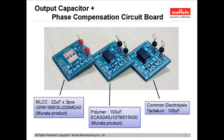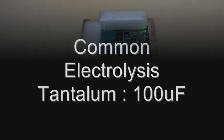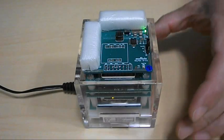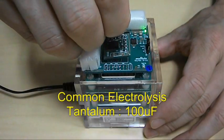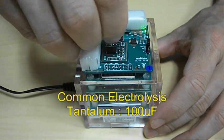Now let's actually measure the ripple. Let's start with the measurement of a common capacitor. The subboard is being inserted into the main board.